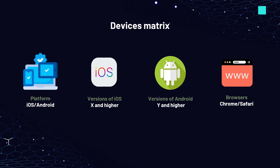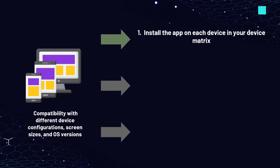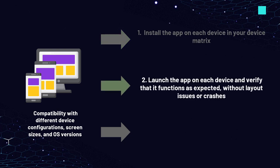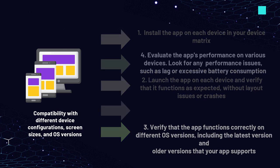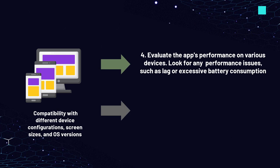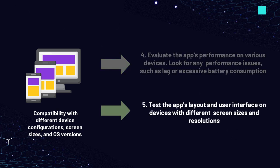Test cases for compatibility include: installing the app on each device in your device matrix and ensuring the installation process runs smoothly; launching the app on each device and verifying it functions as expected without layout issues or crashes; verifying the app functions correctly on different OS versions including the latest and older supported versions; evaluating performance on various devices, looking for lag or excessive battery consumption; and testing layout and UI on devices with different screen sizes and resolutions, looking for elements that are cut off, misaligned, or too small to interact with.